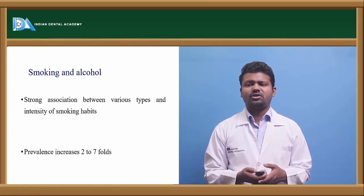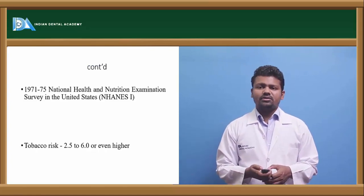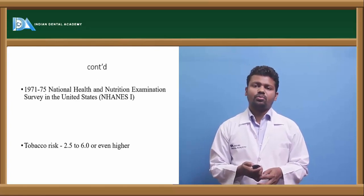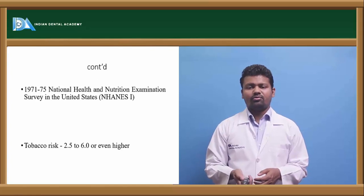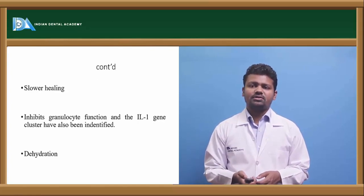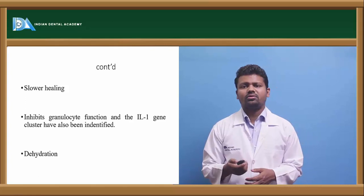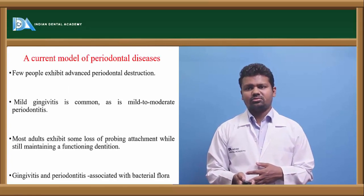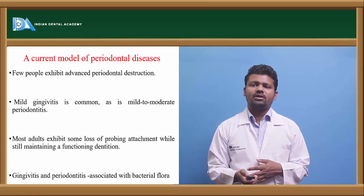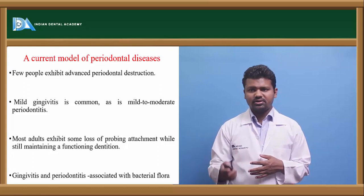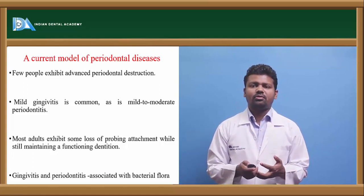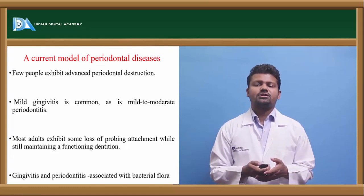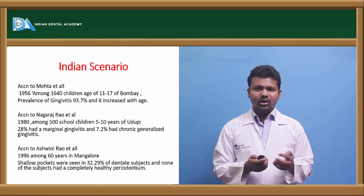Smoking increases the risk of periodontal disease by 2 to 7 times. The 1975 National Health and Nutrition Examination Survey stated the tobacco risk factor is 2.5 to 6.0 and even higher for causing periodontal disease. Tobacco use leads to slow healing, inhibits granulocyte function, and causes dehydration.